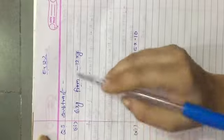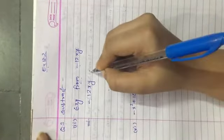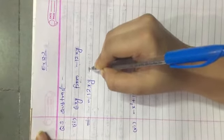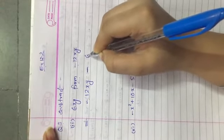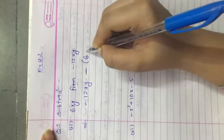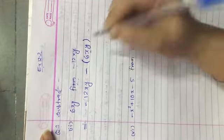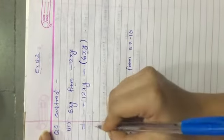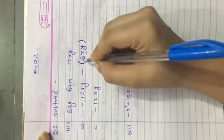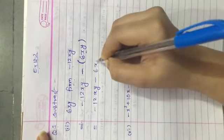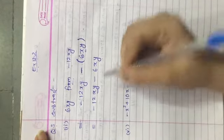So minus 12xy, then we have to subtract, that's why we are putting a minus sign, then the first expression. When you write the first expression, you will write it in brackets. So now in the first step we will open the bracket. Here plus minus becomes minus 6xy.